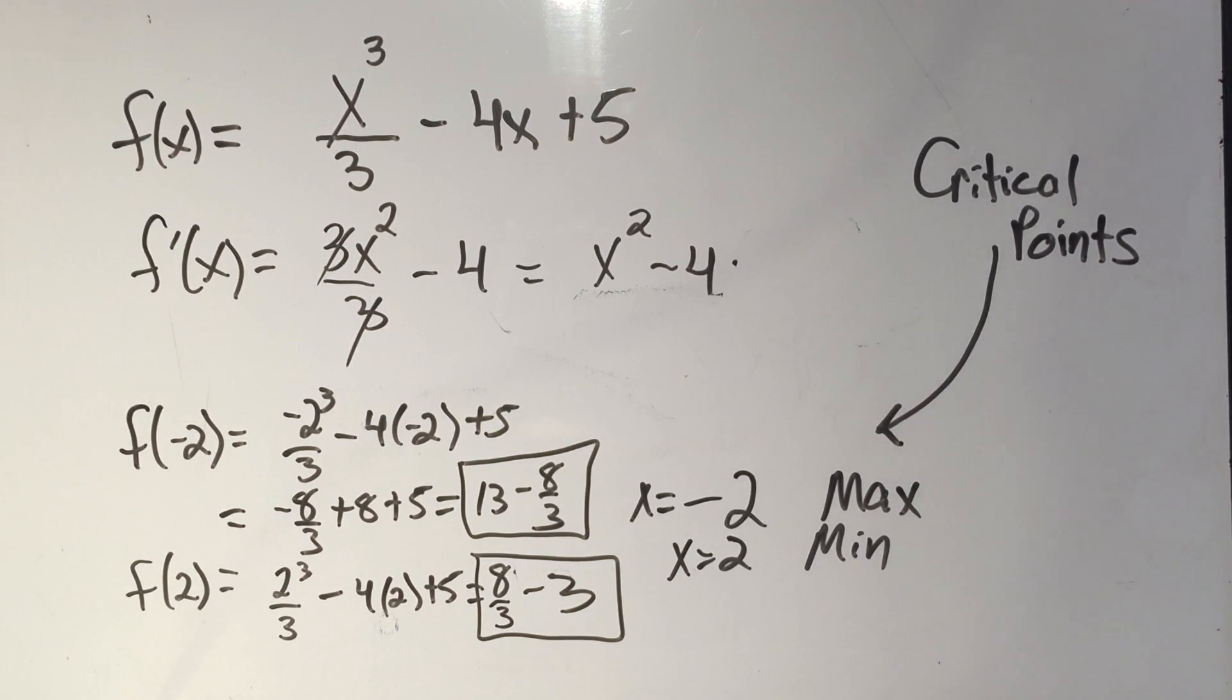Okay, so just a quick recap, to find the critical points, you take the first derivative, and you set it equal to zero, you plot those points on a line, and you test the different intervals to see where the function is increasing and decreasing. That will tell you whether your points are a maximum or a minimum. And if you want the actual maximum or minimum values, you need to plug it into the original function. Okay, I hope you got something out of it, please like and subscribe, comment and tell me what you think and have a great day.